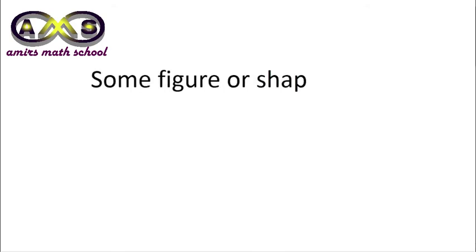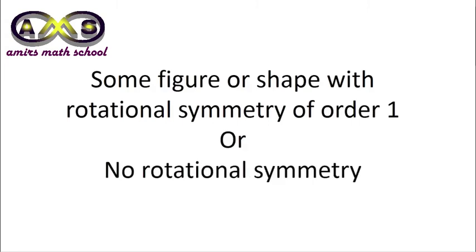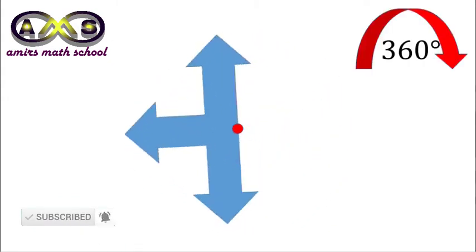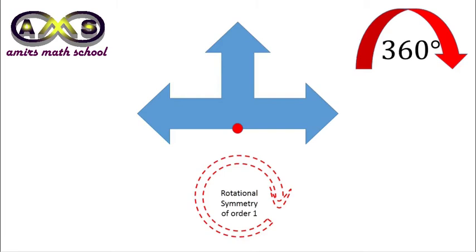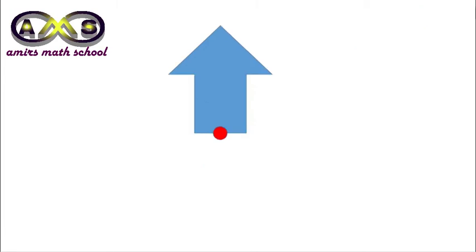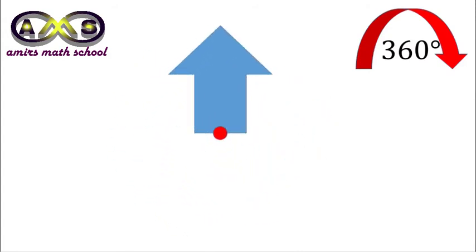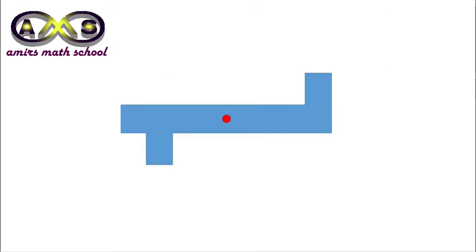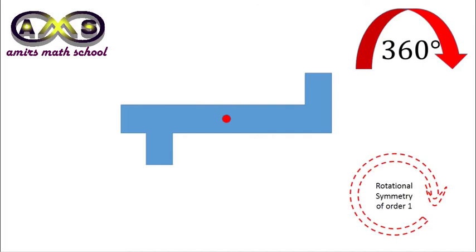Some figures or shapes with rotational symmetry of order 1 — in this case, we can say there is no rotational symmetry. For this shape, after 360 degree rotation, it occupies the initial position again. So, this figure has rotational symmetry of order 1. Another one: after 360 degree rotation, it came to the initial point again. So, this figure also has rotational symmetry of order 1. This figure also has rotational symmetry of order 1.